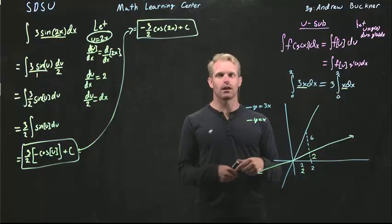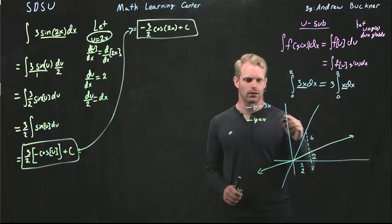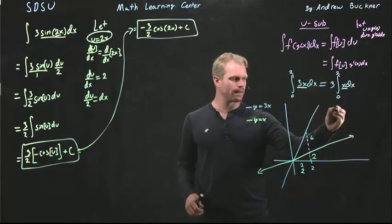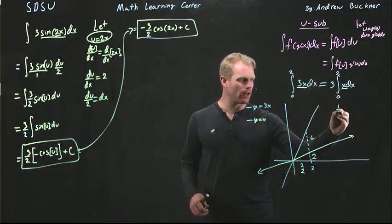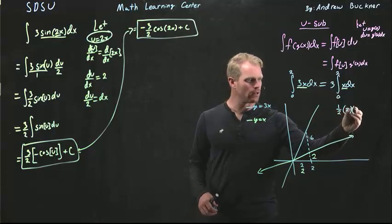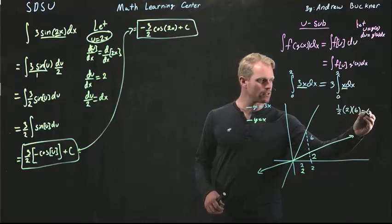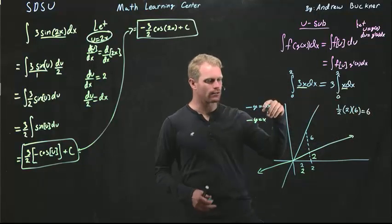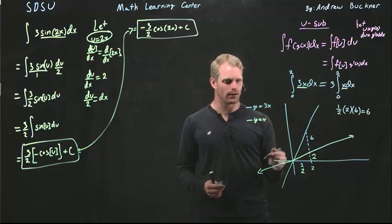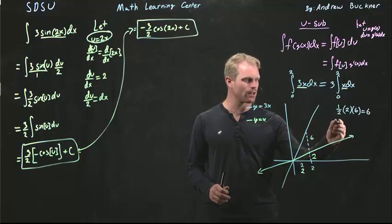When I then solve for the area underneath both of these curves, the blue one for y equals 3x, I'm going to plug in my 1 half, the base which is 2, times the height which is 6. I'm going to get 6 as my answer for this graph.